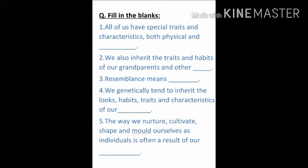I hope you all are done with that. So let's discuss the answers. Number 1: all of us have special traits and characteristics both physical and mental. Number 2: we also inherit the traits and habits of our grandparents and other relatives. Number 3: resemblance means similarity. Number 4: we genetically tend to inherit the looks, habits, traits and characteristics of our parents or relatives. And the last one: the way we nurture, cultivate, shape and mold ourselves as individuals is often a result of our environment.